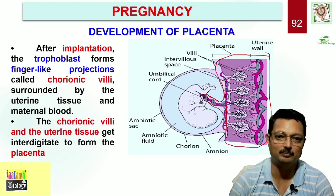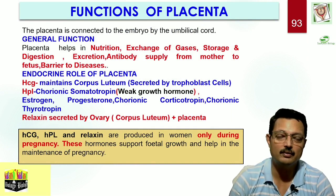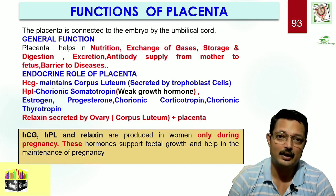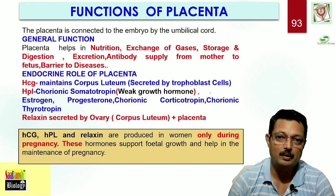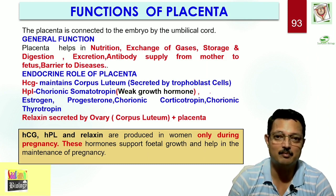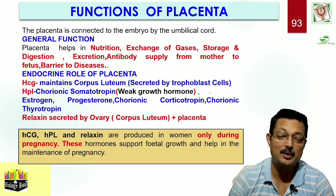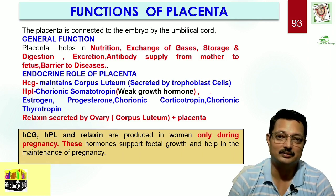Placenta is very important because it subserves many important functions. In general, it fulfills the nutritional requirement of the fetus. In the absence of developed organs like lungs, exchange of gases is also done by placenta. It subserves the role of storage and digestion. Also, it helps in removal of nitrogenous waste from the fetal blood and transfers it to maternal blood, which is excreted by the mother's kidney. It also facilitates transfer of antibodies from maternal blood to fetal blood, thereby preventing the fetus from many diseases, and also acts as a barrier to many diseases.